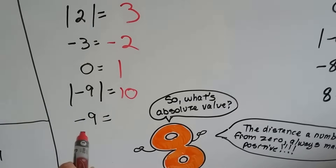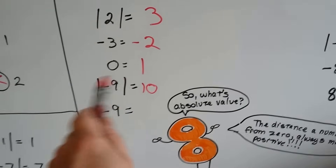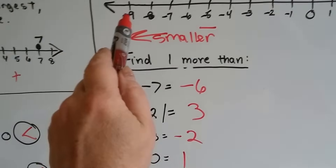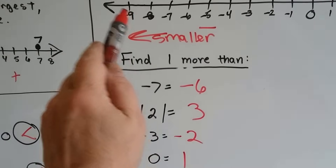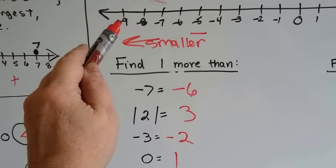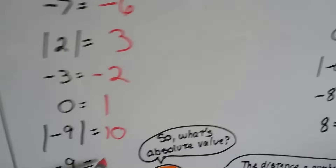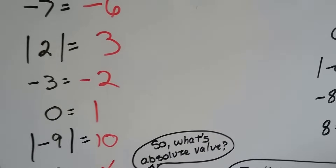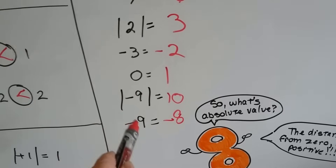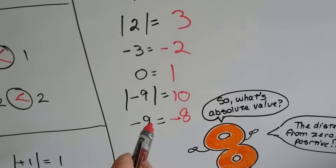But what's one more than negative nine when it doesn't have the absolute value marks on it? Here's negative nine on the number line, and if we want to go one more — one bigger — we end up at negative eight. Big difference, isn't it, from having the absolute value sign on it to not having it.